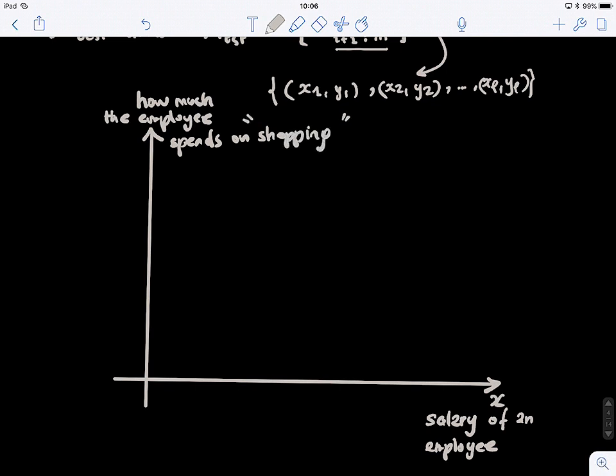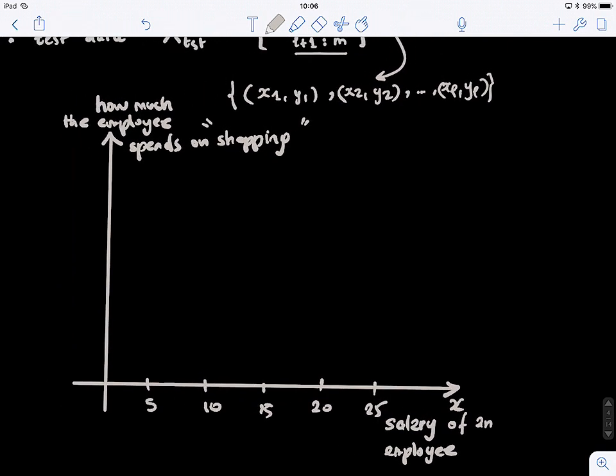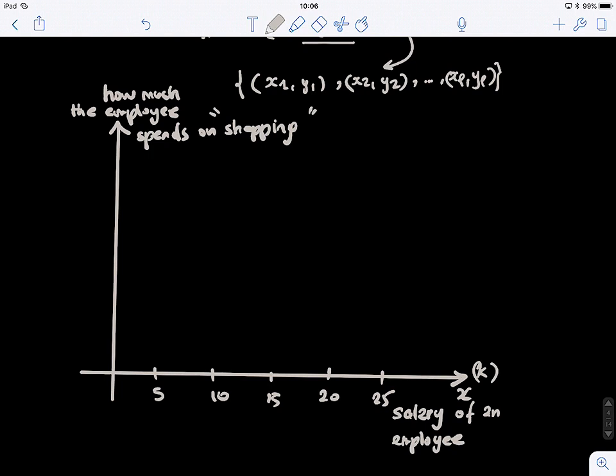So for example, if we start—let me put here 5, 10, 15, 20, 25, etc. How do you draw this data? It depends. But hypothetically, you would expect that generally, the higher the salary, the more you might be able to spend on shopping. So the trend might go like this. These are points we collected from different employees. Maybe the majority are right there. And this is the distribution of our data.